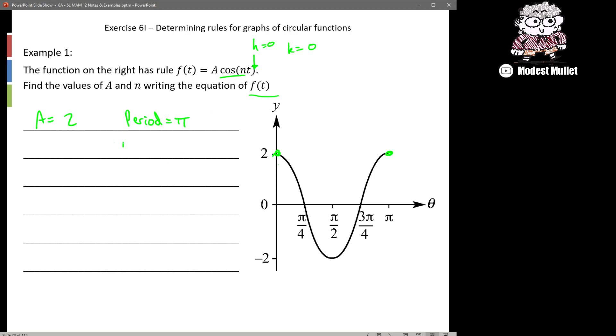So we can use that p = 2π/b, so we found our period was π and we're going to just solve to get b by itself. So we end up getting 2π divided by π is equal to b, so b is equal to 2.